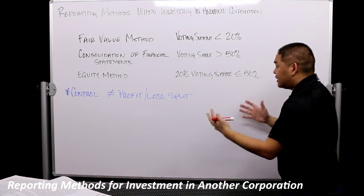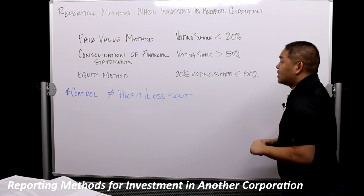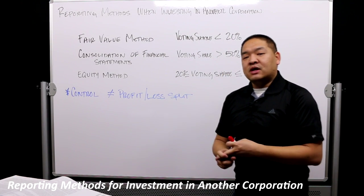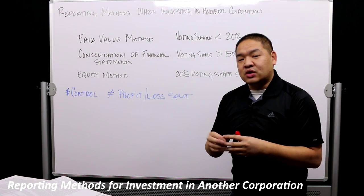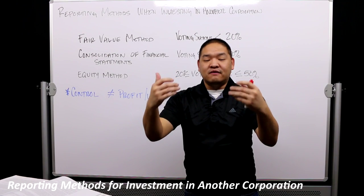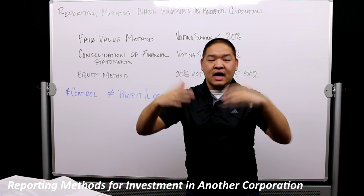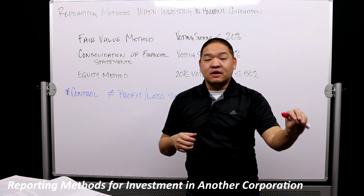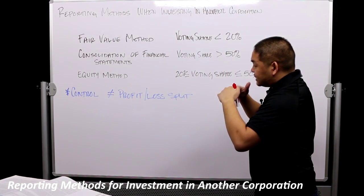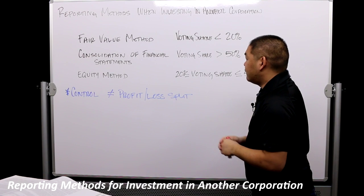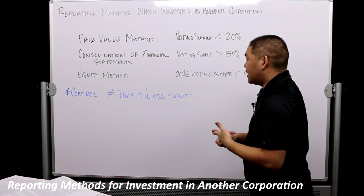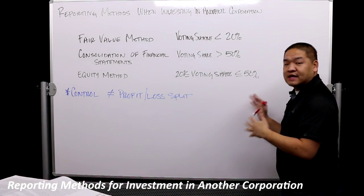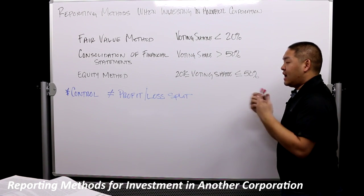The last method is the equity method, which is in the middle. If it doesn't meet the fair value criteria and doesn't meet consolidation, then we use the equity method. With the equity method, we move the investment balance up and down as we recognize income or dividends from the investee. This method applies when the investor has 20% or more up to 50% of the voting shares — significant but not absolute control.